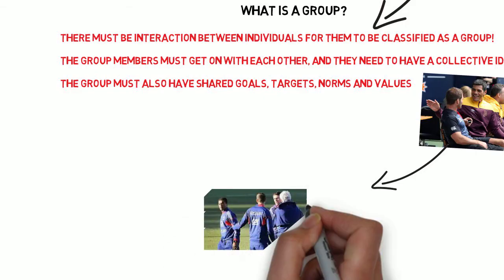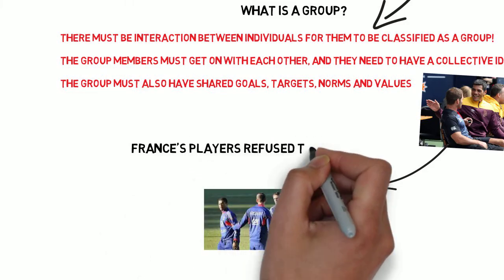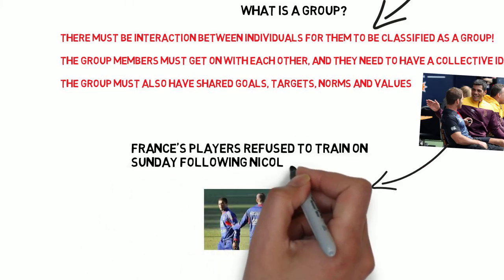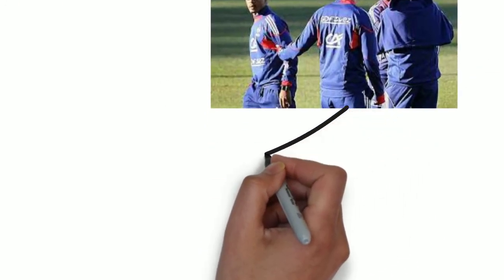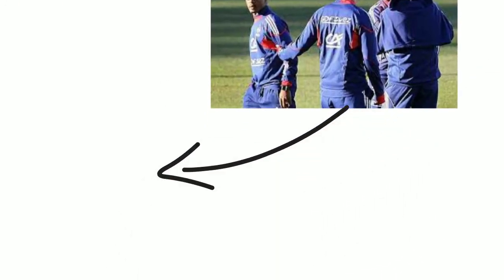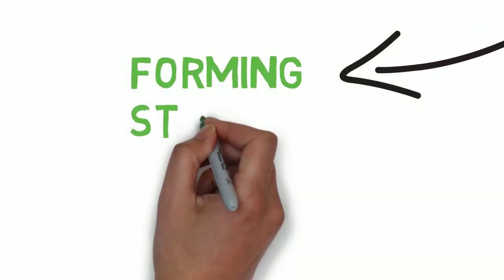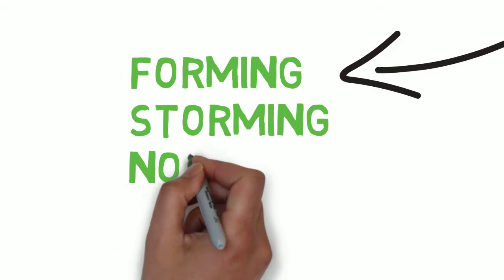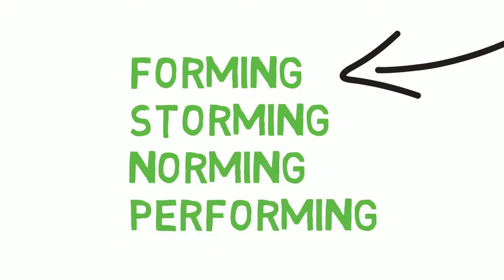Groups are normally formed through four different stages, but how come some groups fall apart? For example, France's players refused to train on a Sunday following one of their team's players' expulsion. What made that group so tight that they were willing to jeopardize the World Cup? Teams are made through four stages: forming, storming, norming, and then performing.